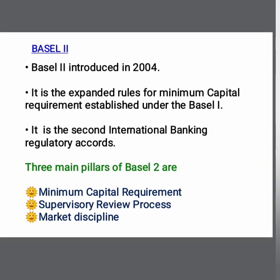The first pillar is the minimum capital requirement. It provides guidelines for banks to allocate capital against risks including credit risk, market risk, and operational risk. If risk is low, a lower minimum capital requirement may be provided accordingly.